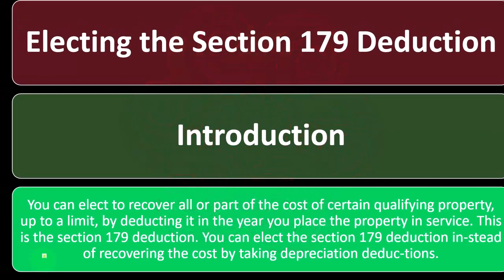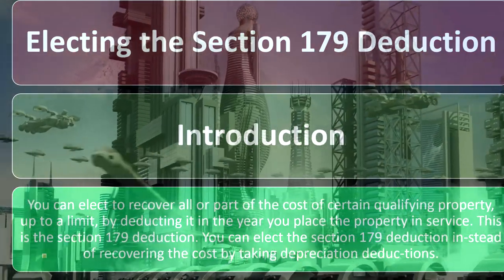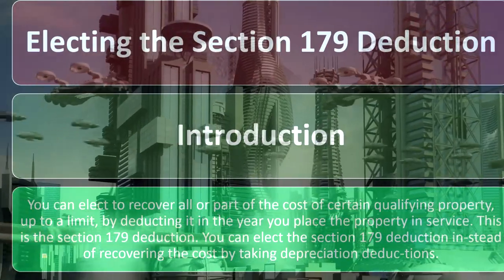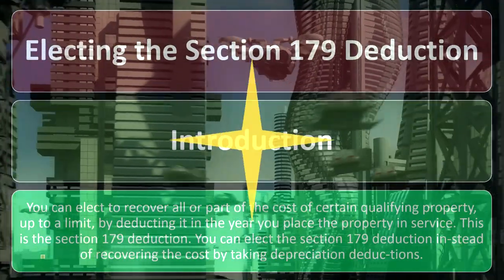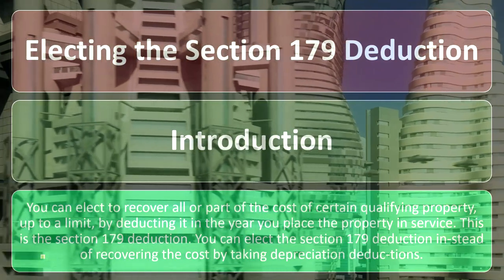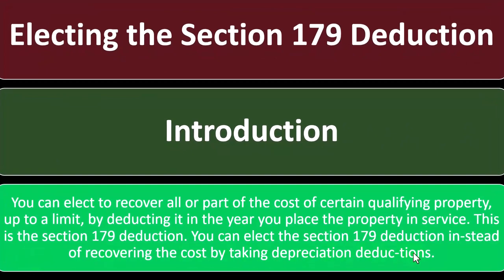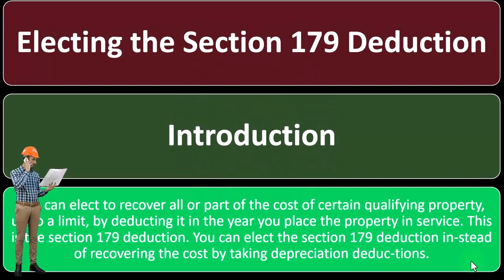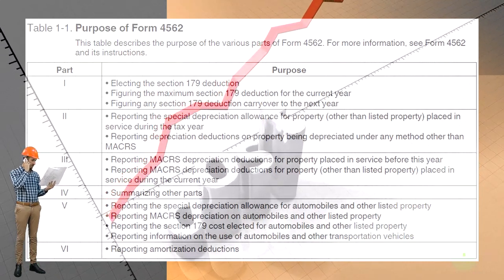Typical tax planning favors deductions sooner because of time value of money and the possibility the tax code could change. However, that's not always the case. If you expect higher revenue — and therefore higher progressive tax rates — in future years, you might prefer to forgo the 179 deduction in a low-income year and take it later when the deduction is worth more. You can elect the 179 deduction instead of recovering the cost through regular depreciation deductions.